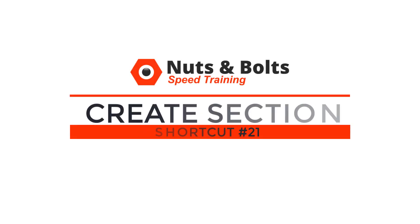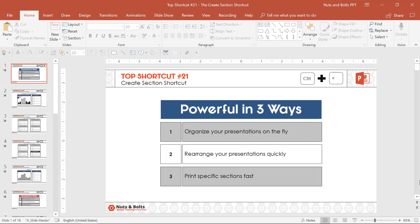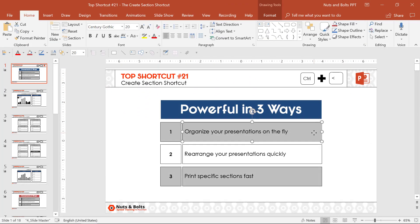Top shortcut number 21: the Create Section shortcut, which can be super useful when printing your slides. The shortcut Control + Left Caret is useful for organizing your presentations on the fly, rearranging your presentations quickly, and printing specific sections fast.